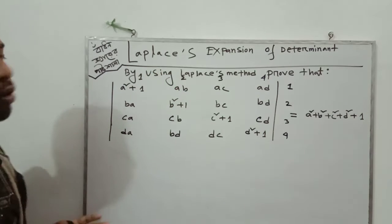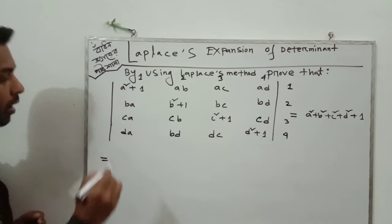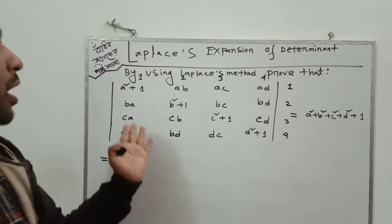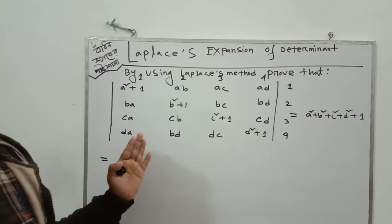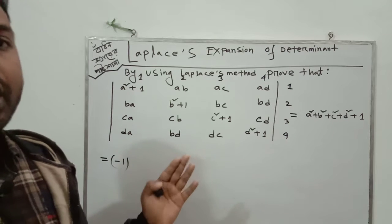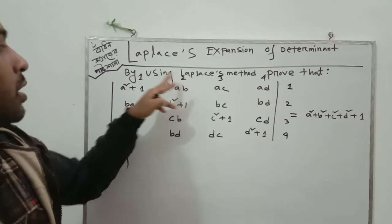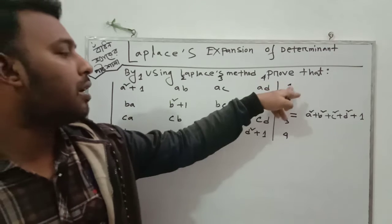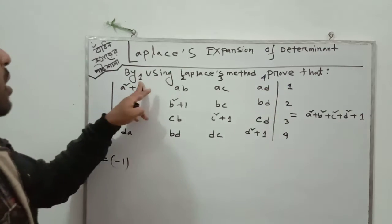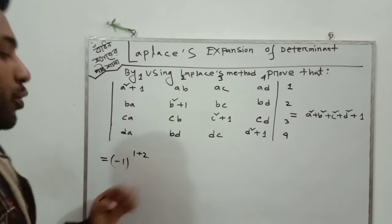Now we have to solve this problem using the determinant method. First we have to determine the cofactor. In case of a three-by-three determinant, the method is: minus one to the power row plus column. Here we first take two columns — column one and two — which will be fixed, and this part will change.